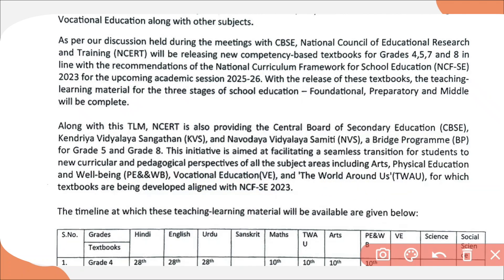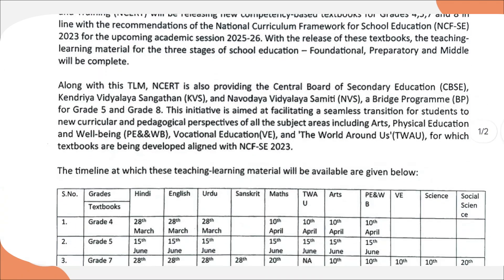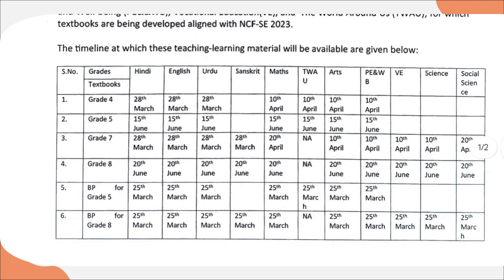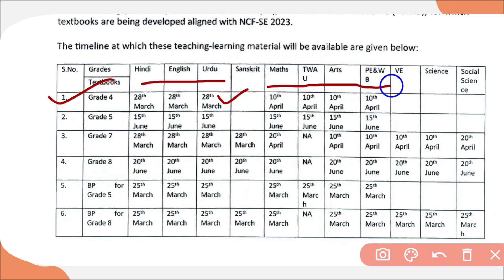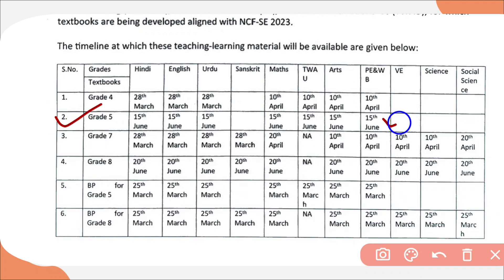Now let us look at when this material will be available. For different classes, different timelines are there. For class 4, English, Hindi and Urdu will be available by 20th March, whereas Maths, the world around us, art, PE and well-being will be available by 10th April. For grade 5, all the books will be available by 15th June.